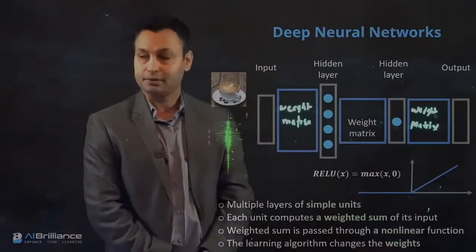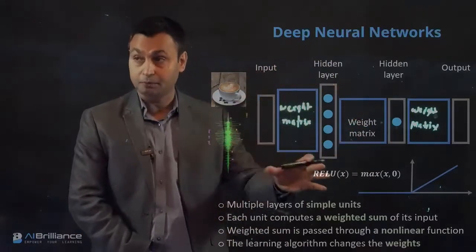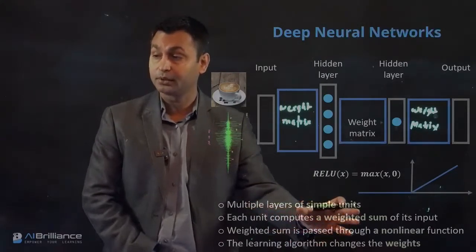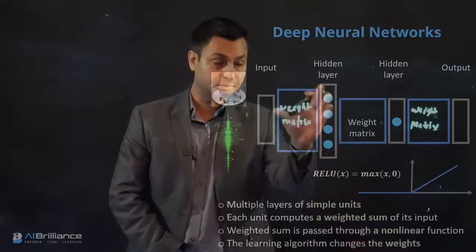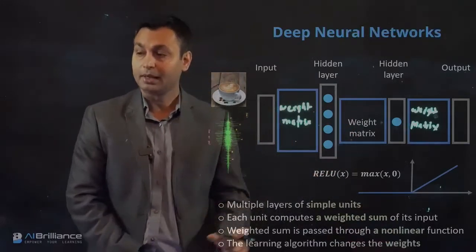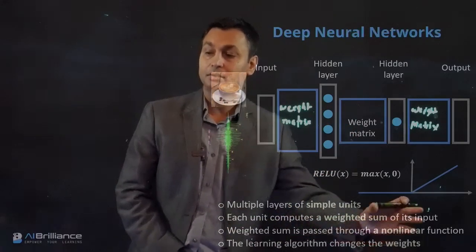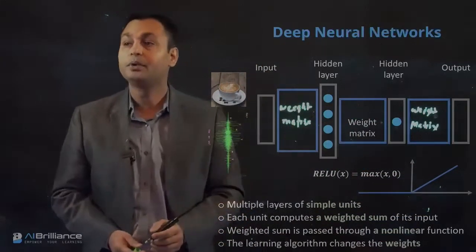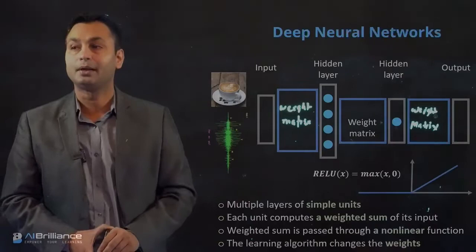When we talk about deep neural networks, we have multiple layers of simple units. Each unit computes a weighted sum of input which is basically stored in the weight matrix form, and the weighted sum is passed through a nonlinear function.